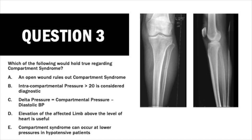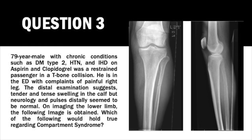Question 3: Which of the following would hold true regarding compartment syndrome? Options: an open wound rules out compartment syndrome; intracompartmental pressure greater than 20 is considered diagnostic; diagnostic delta pressure equals compartmental pressure minus diastolic pressure; elevation of the affected limb above the level of the heart is useful; compartment syndrome can occur at lower pressures in hypotensive patients. Clinical stem: a 79-year-old male with type 2 diabetes, hypertension, and ischemic heart disease on aspirin and clopidogrel was a restrained passenger in a T-bone collision, presenting with painful right leg.